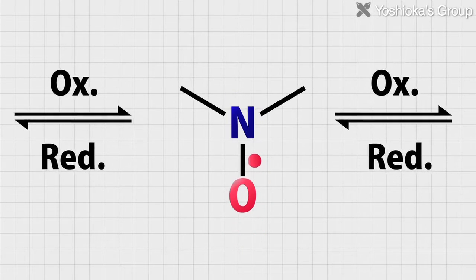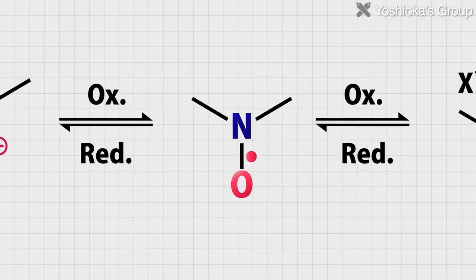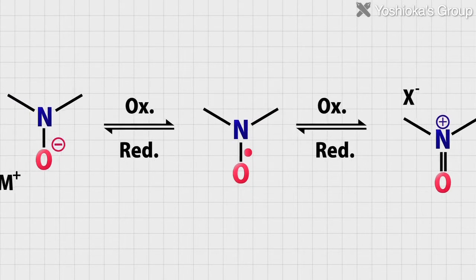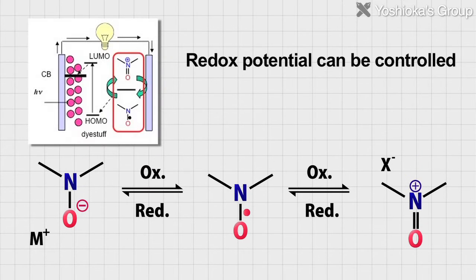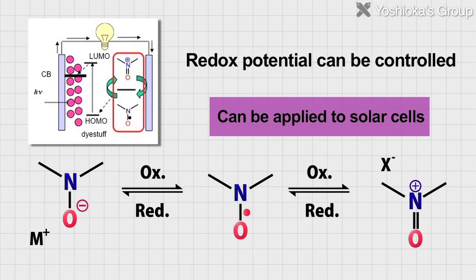Because the oxidized or reduced forms of stable radicals are also chemically stable, they can be oxidized and reduced repeatedly. So these materials are also attracting attention as new battery materials.